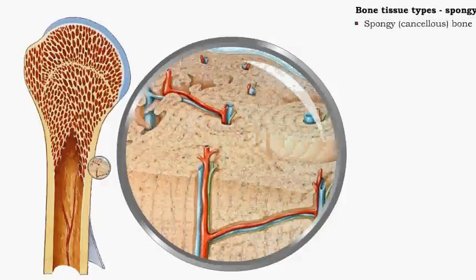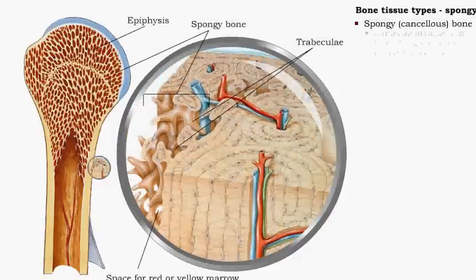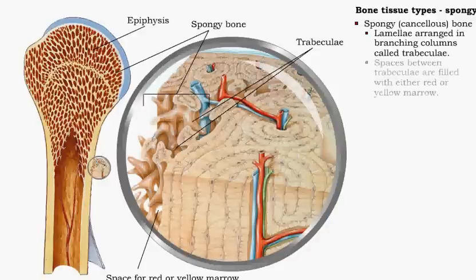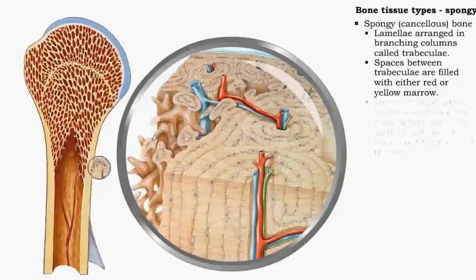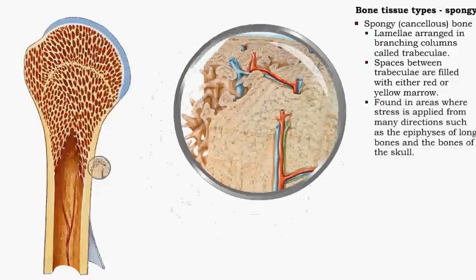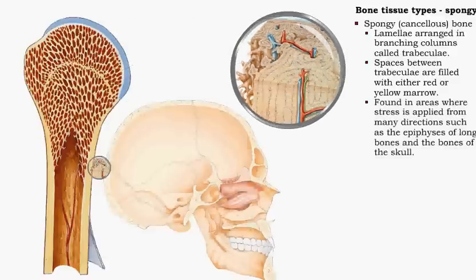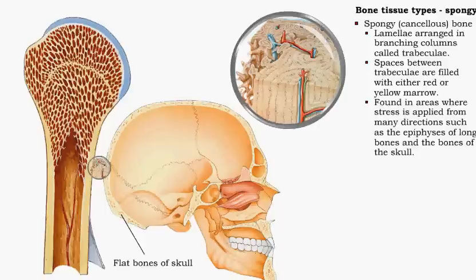In spongy or cancellous bone, the lamellae are arranged in branching columns called trabeculae. The spaces between trabeculae are filled with either red or yellow marrow. The trabeculae are oriented along lines of stress.